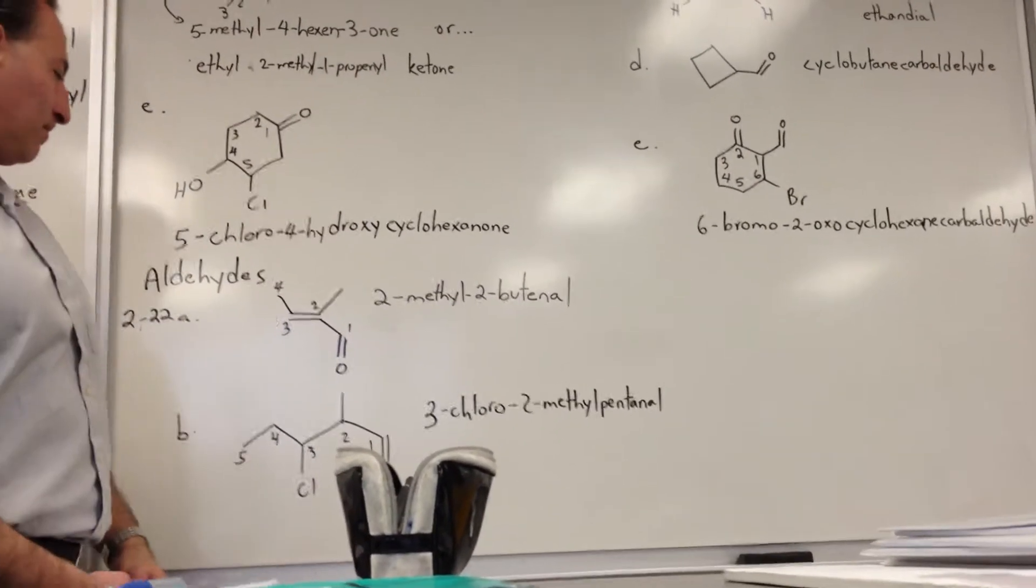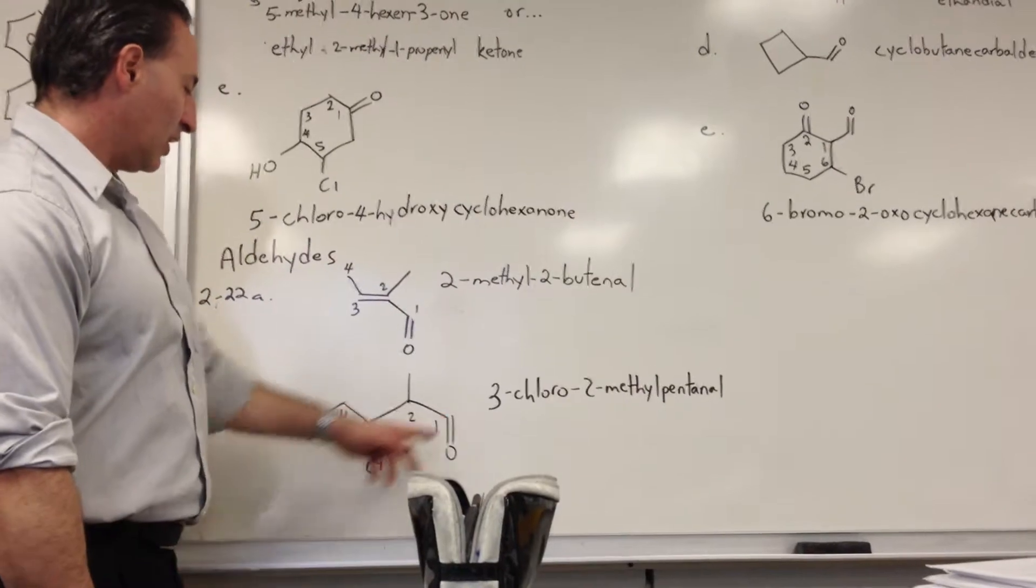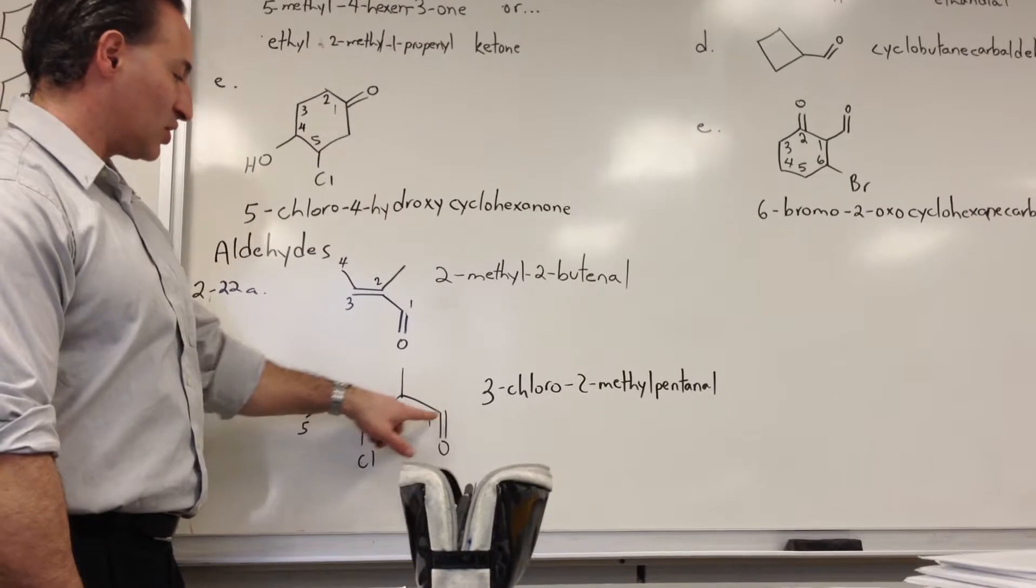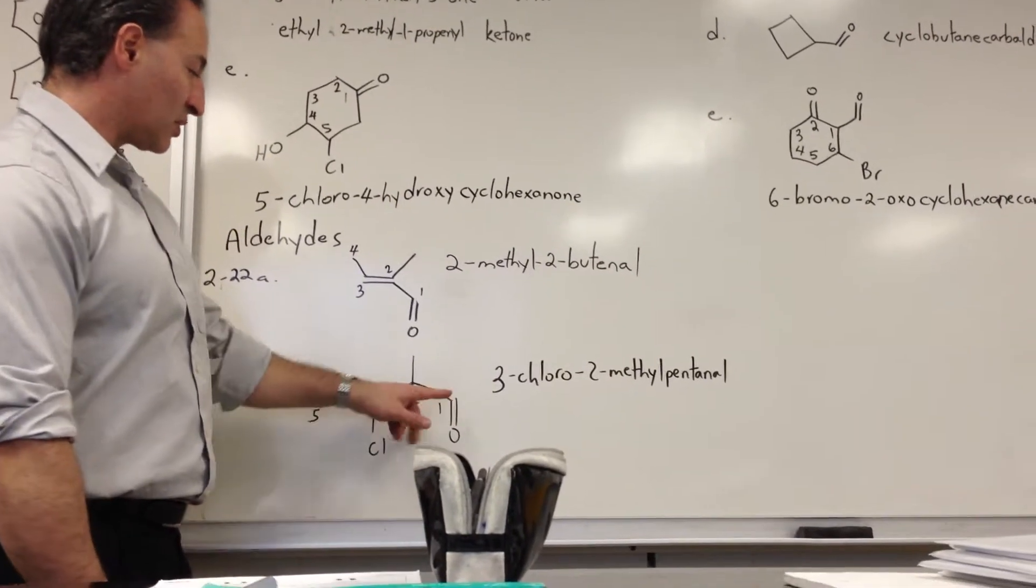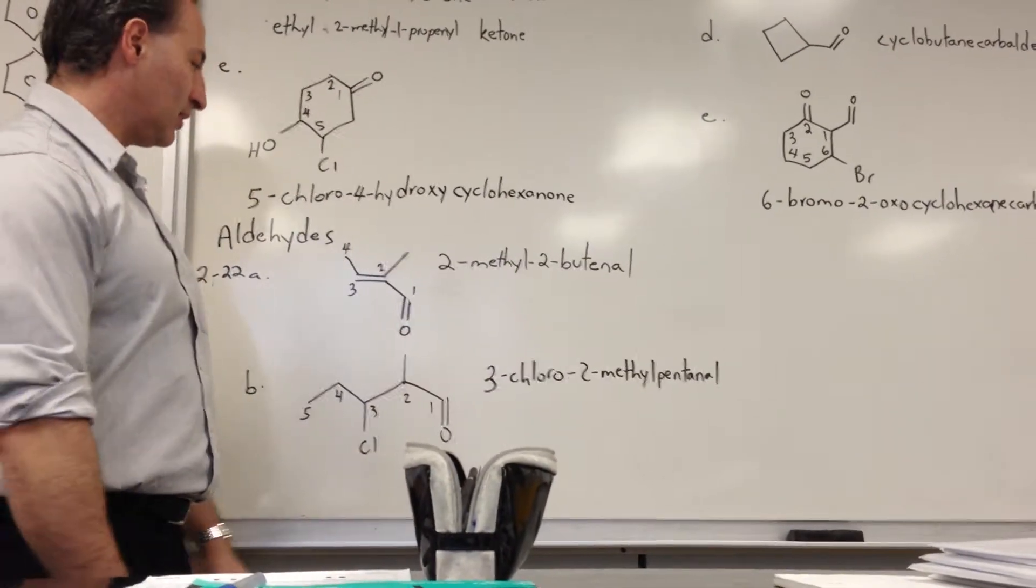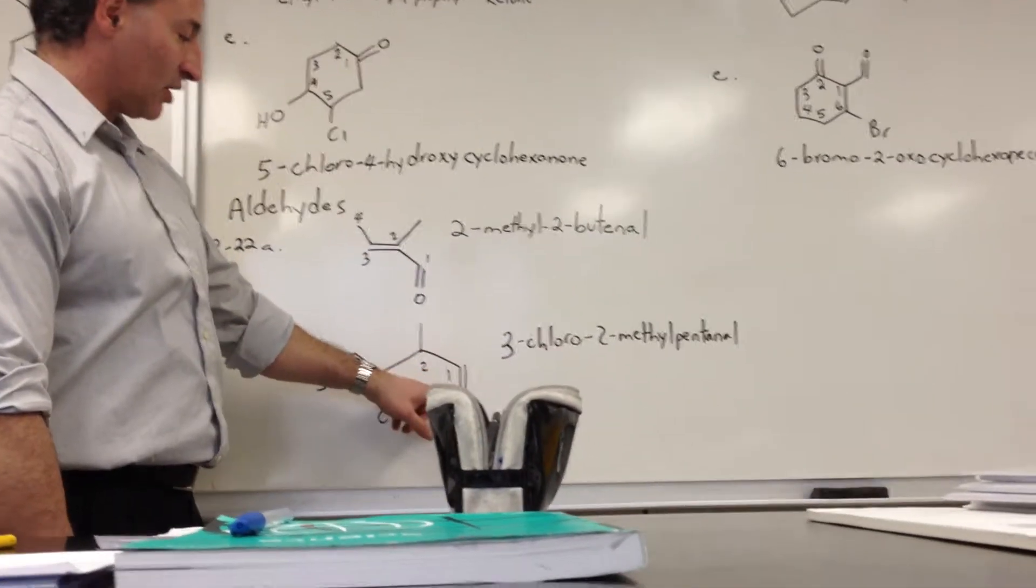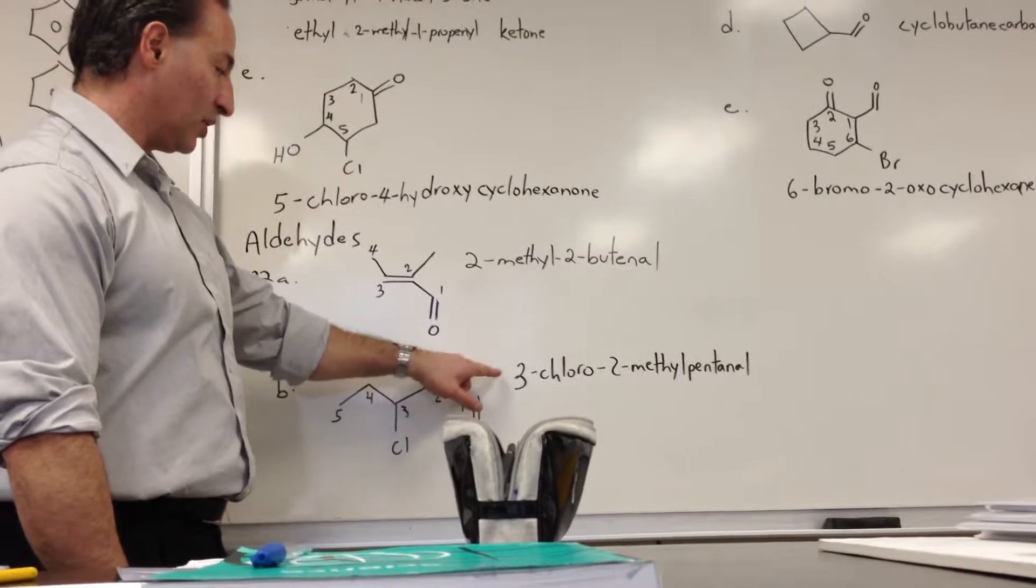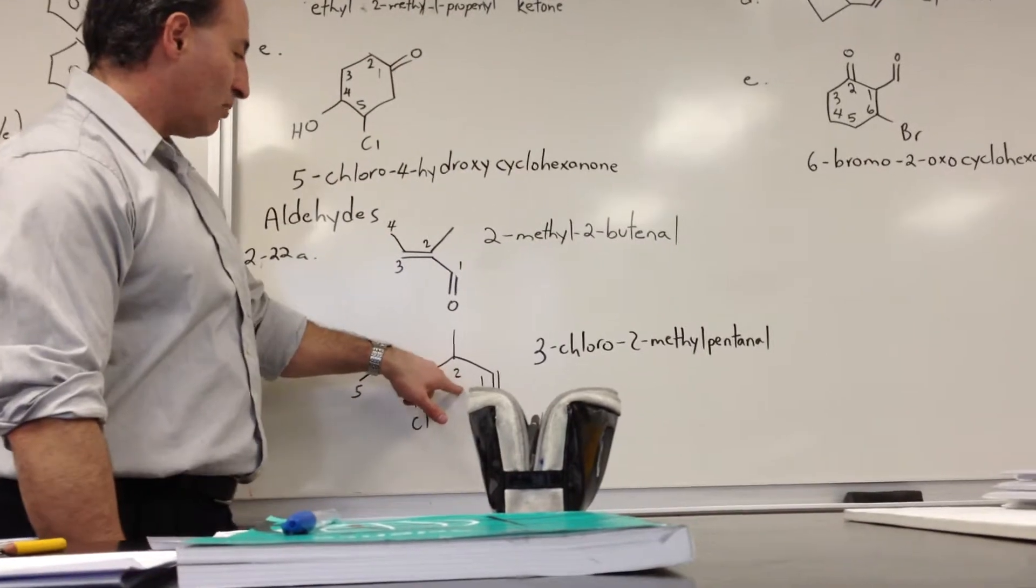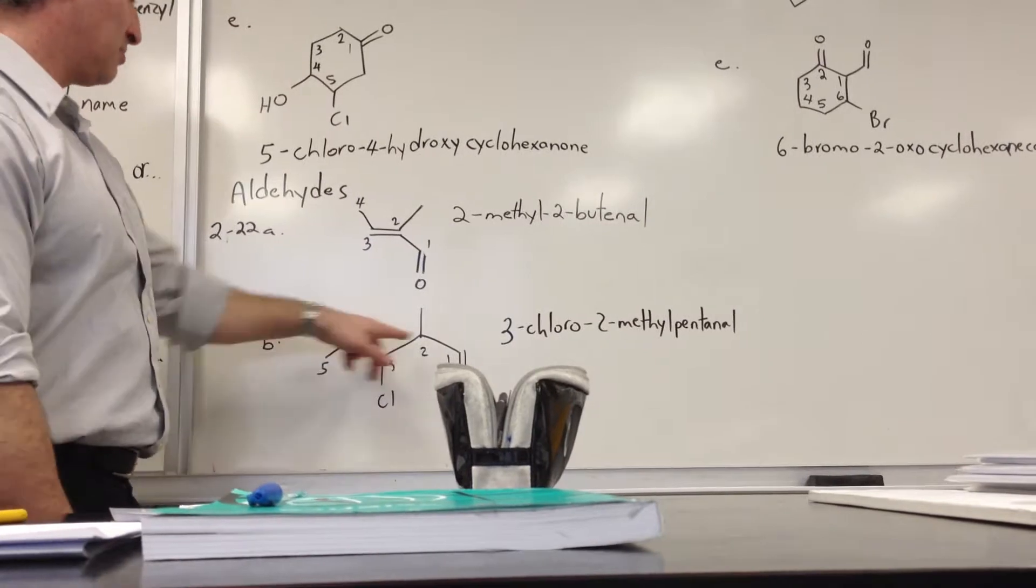Now, 22b, we have an aldehyde as well with a methyl substituent and a chlorine substituent. It's 5 carbons long. The methyl substituent is at the second position after the carbon that is containing the aldehyde. You notice when you draw an aldehyde in bond line notation, you don't have to draw the hydrogen. If you do, it's fine. But when you draw a bond line notation, you just draw the double, the C double bond O, the carbonyl part, and then connect it to the carbon chain. We know there's a hydrogen there, but we don't necessarily draw it. So we would call this 3-chloro-2-methylpentanal, and we put chloro first because C comes before M.